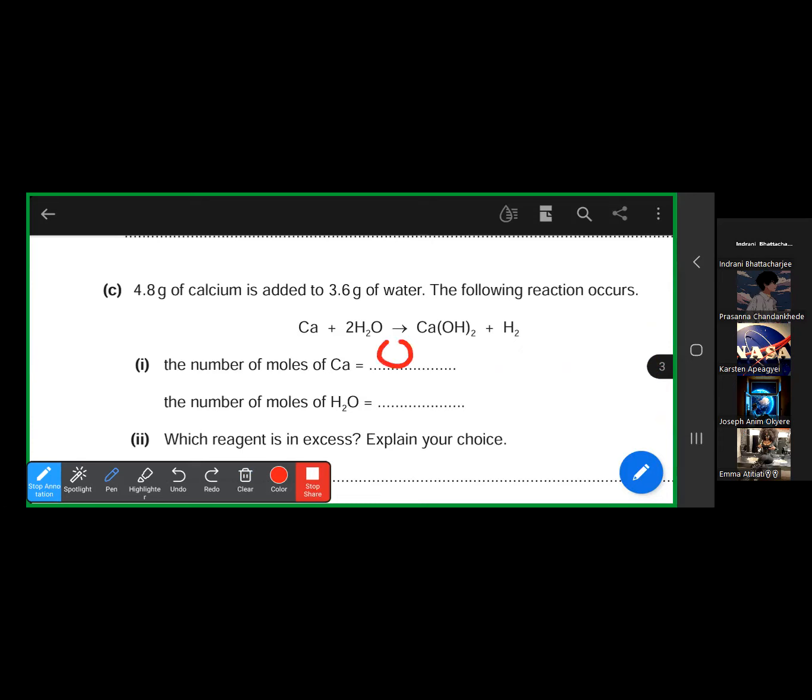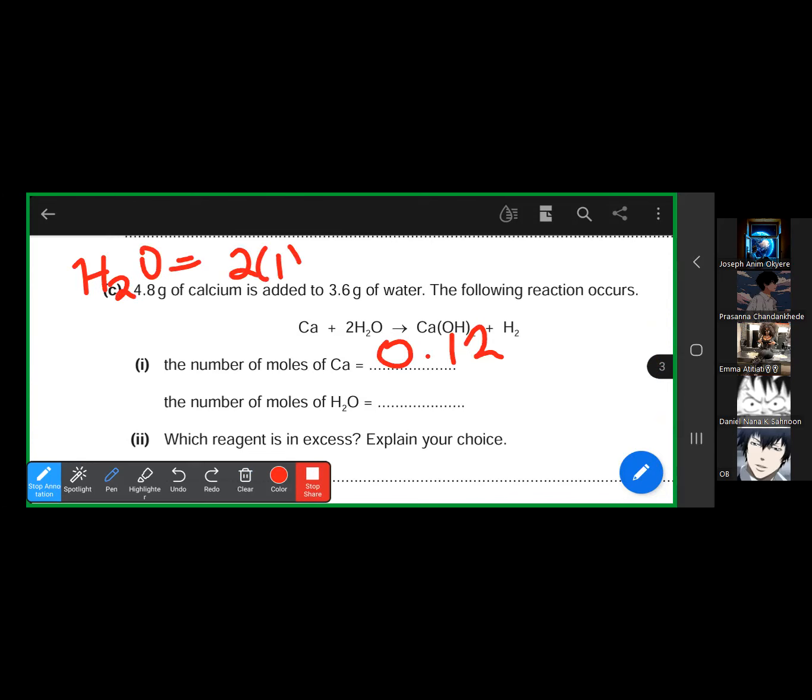4.8 divided by 40. 0.12. Good. What's the number of moles of water? We do the same thing for water: 3.6 over 18. The molar mass of water is 18. H₂O: hydrogen is 0.2, 0.2, plus 16, so this is 18 grams per mole.